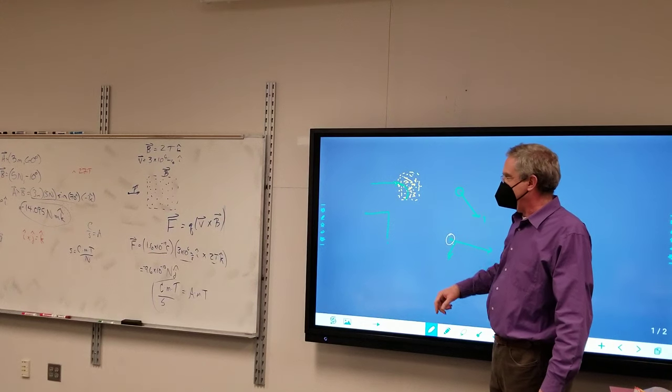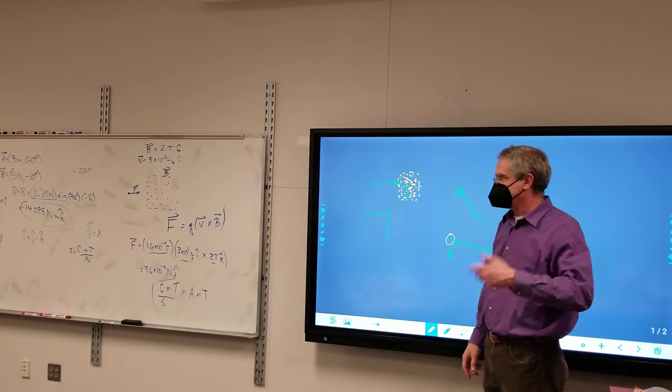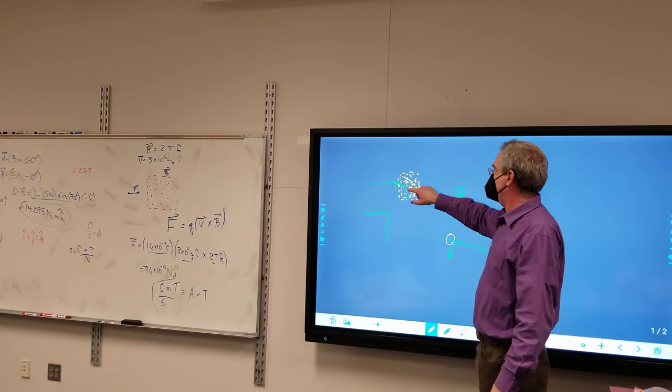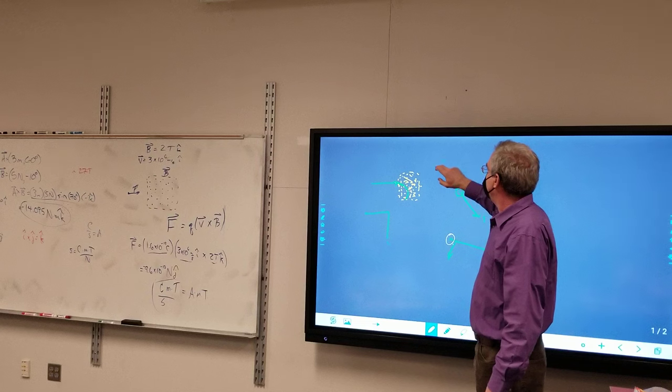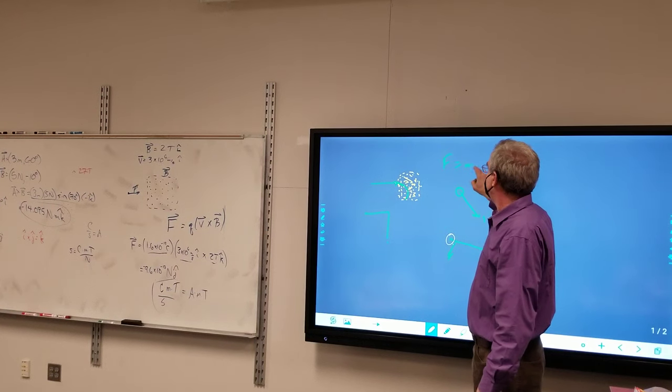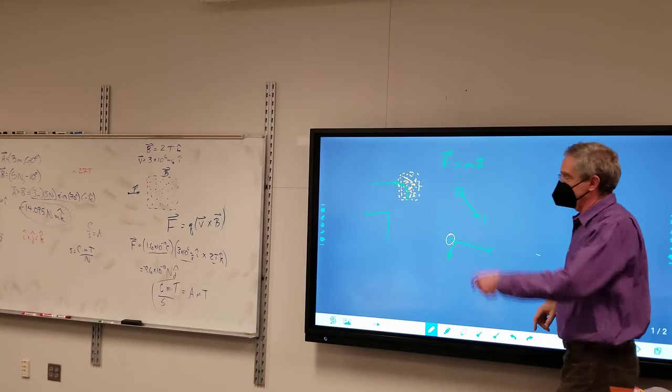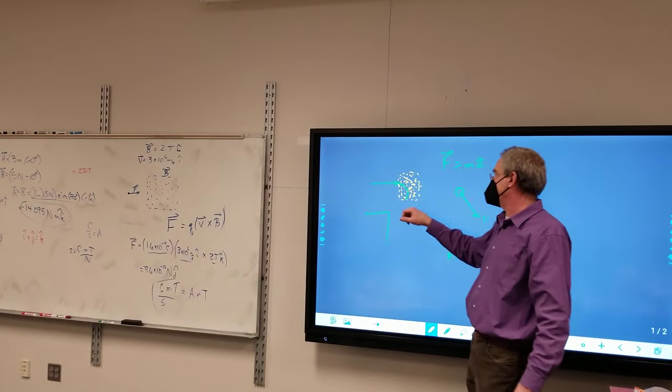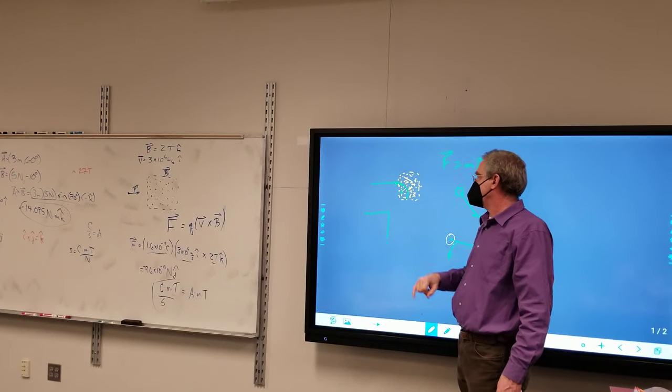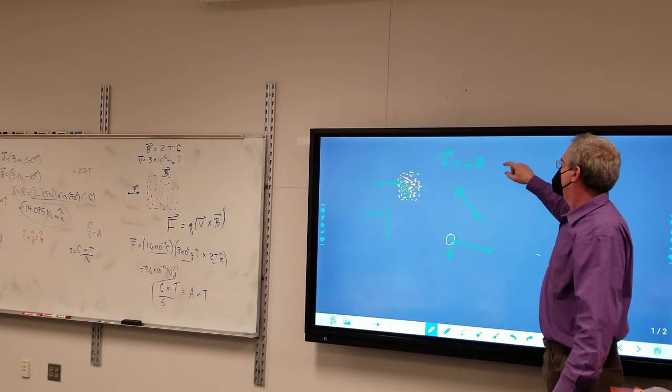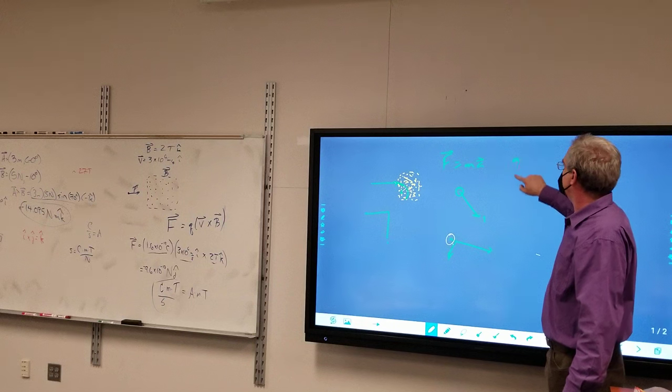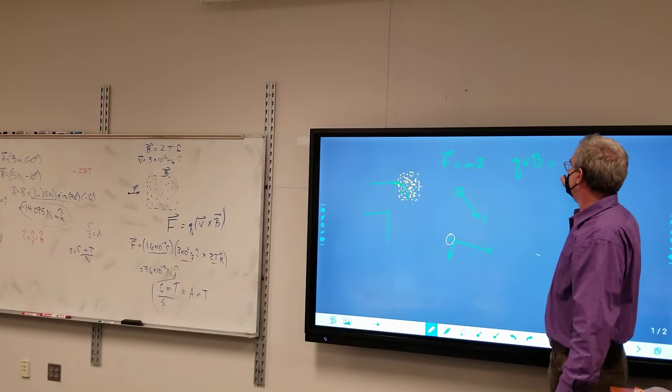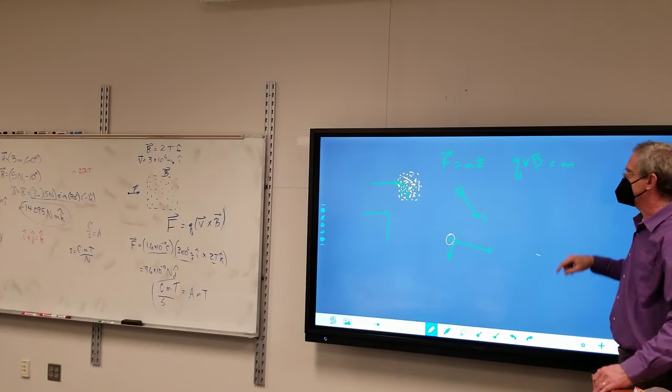So from a Newton's second law point of view, if I wanted to figure out the acceleration of this proton, well, I know F equals MA. The force is the force from the magnetic field. So I end up with QVB.